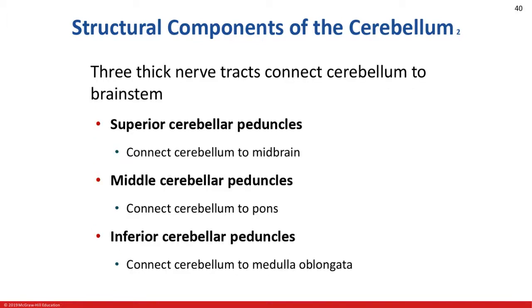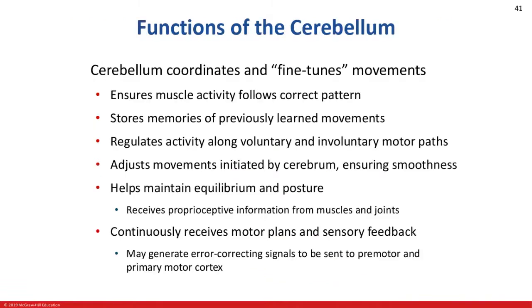The three cerebellar peduncles connect the cerebellum to the brainstem: superior cerebellar peduncles connect to the midbrain, middle cerebellar peduncles connect to the pons, and inferior cerebellar peduncles connect to the medulla oblongata. So what does the cerebellum do? It's a fine tuner — it coordinates and fine-tunes movements. It's all about corrective patterns.